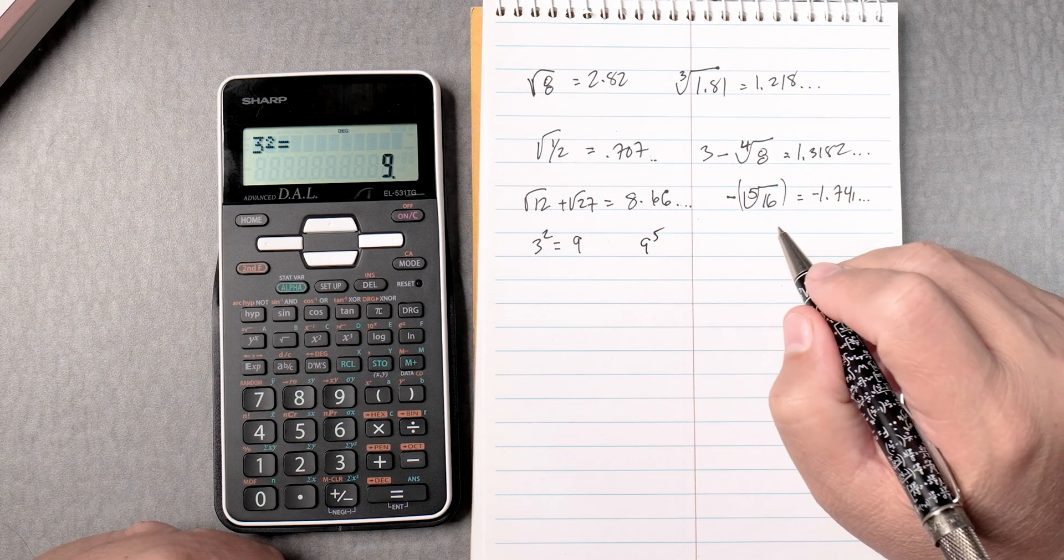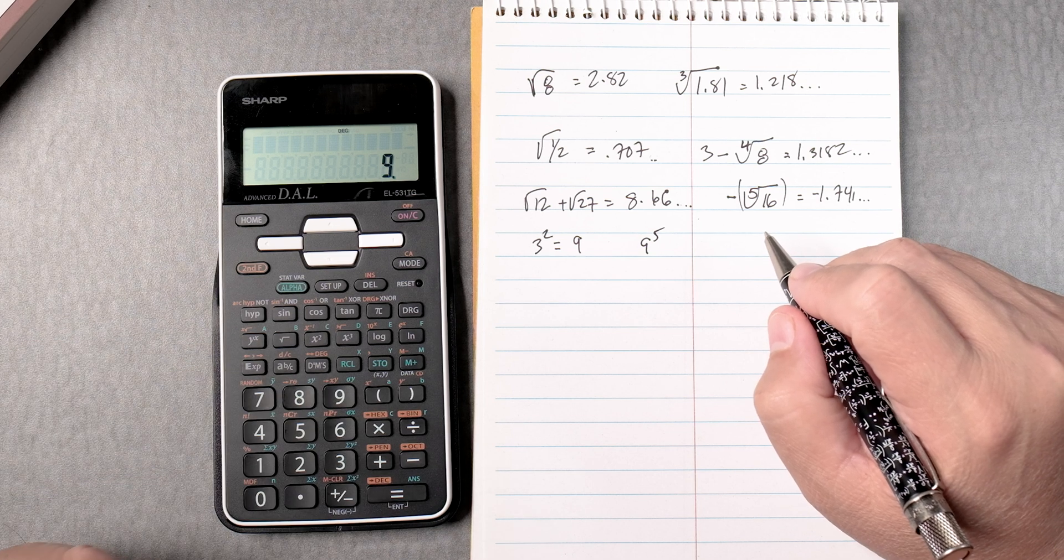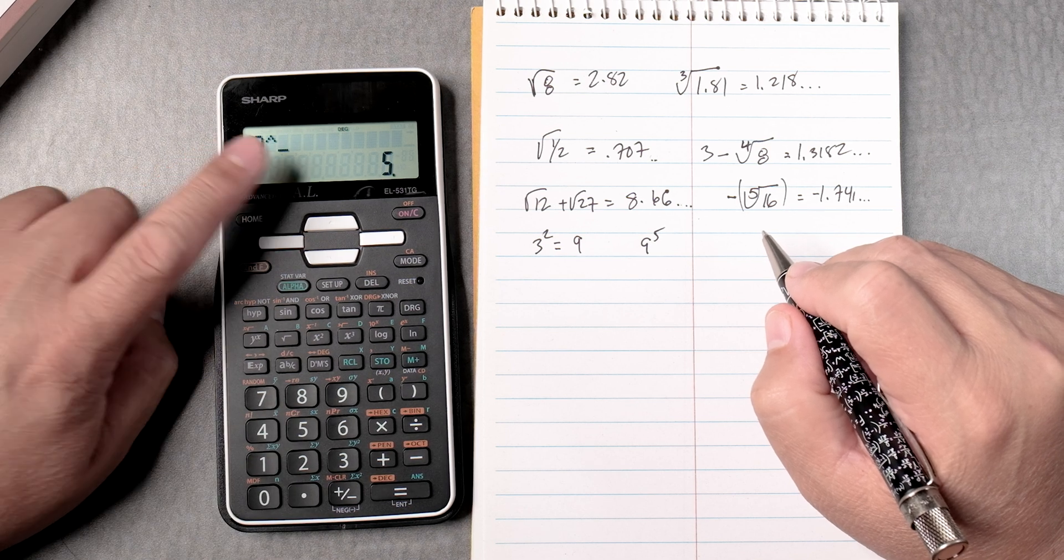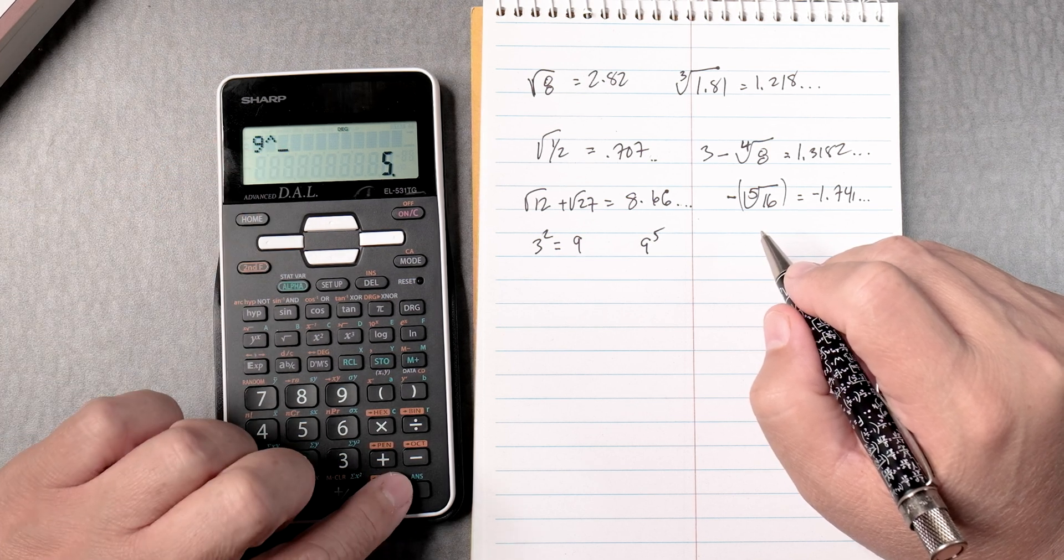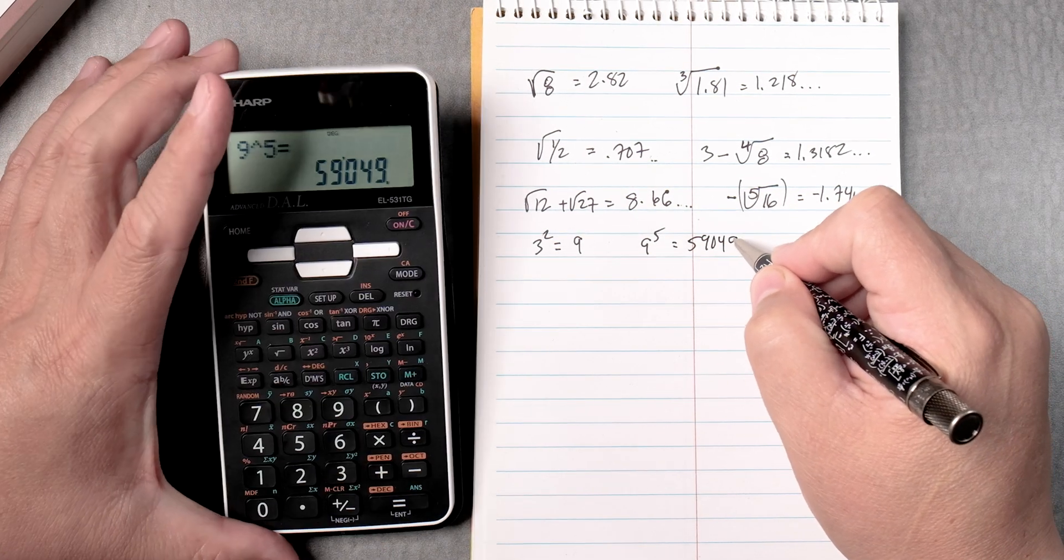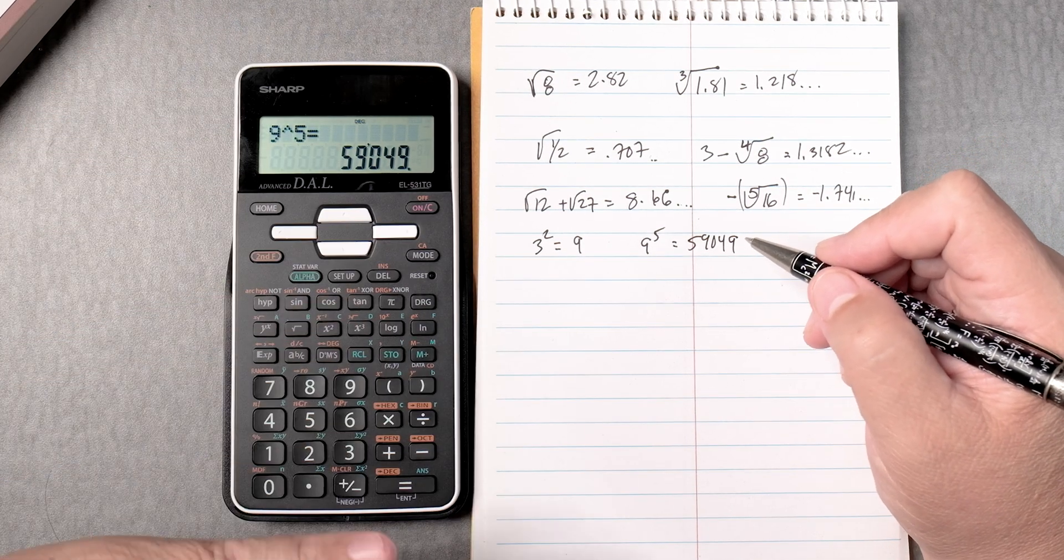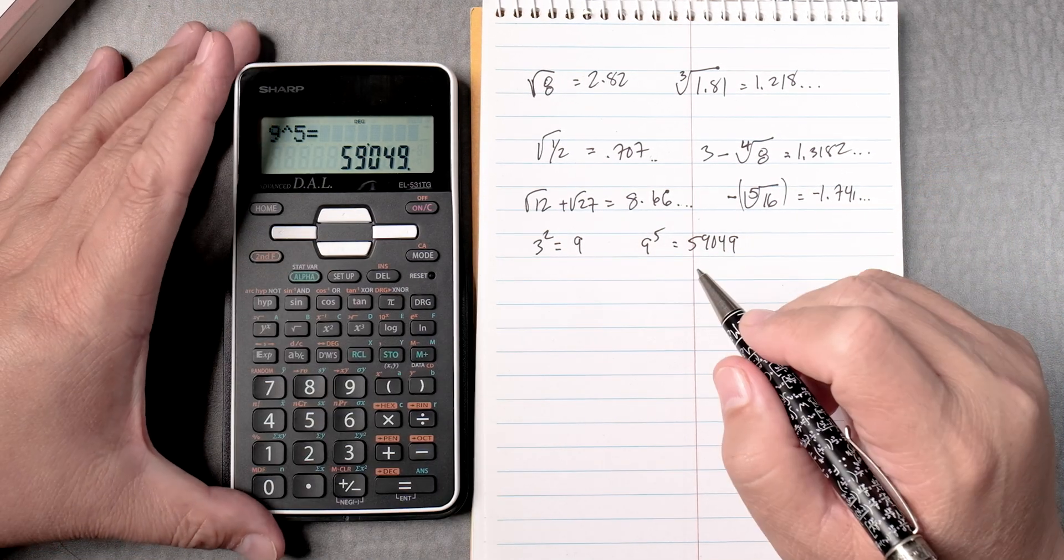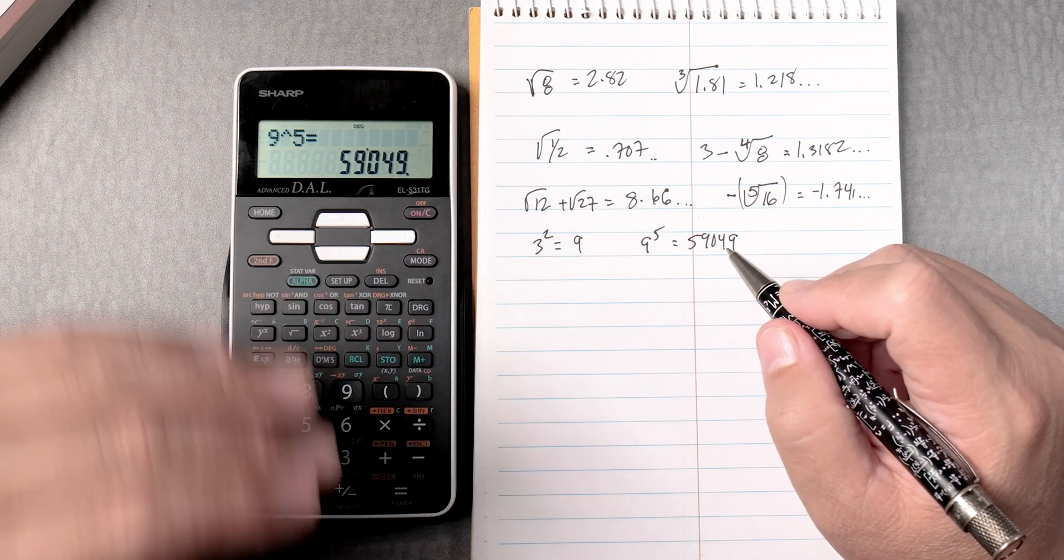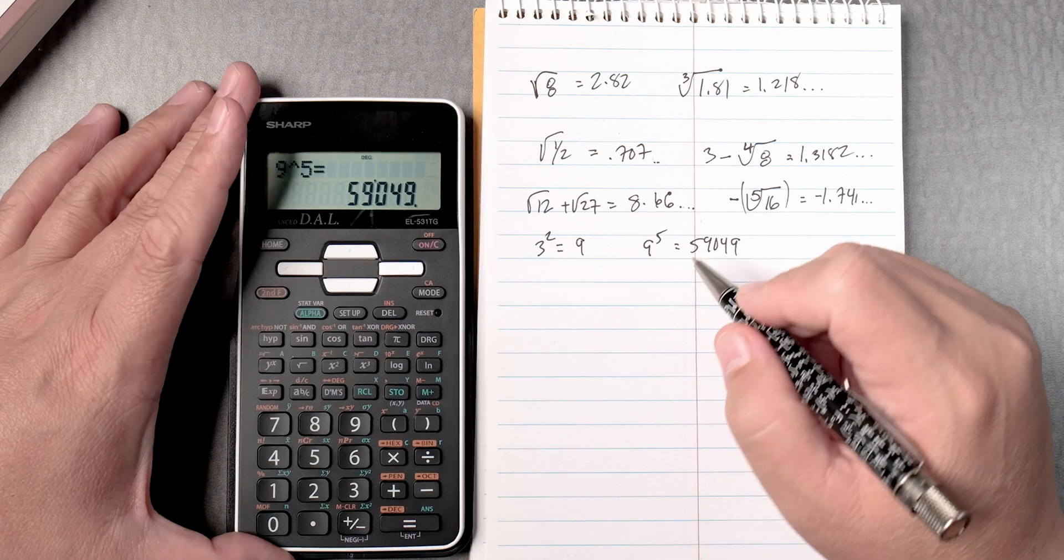9 to the fifth power. So we press 9, y to the x, and 5. You can see that the 5 is not next to the carat, but it's fine. 59049. The angle at which I'm seeing it is not super great. Some calculators have good angle sight, but not this one. You have to be almost like this to see it, but that's okay.